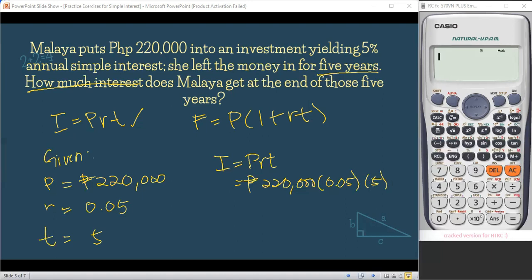So meaning to say, using this formula, we have I equals PRT, that will give us 220,000 times 0.05 times 5. So in our calculators, that is 220,000 times 0.05. So that is 11,000 times 5. That is P55,000.